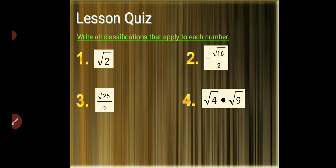Write all classifications that apply to each number. Number 1: square root of 2 is real and irrational. Number 2: square root of negative 16 over 2 is real, integers, and rational.